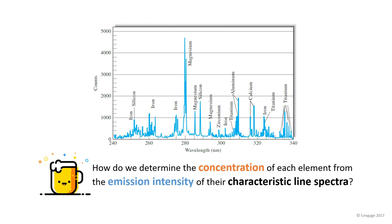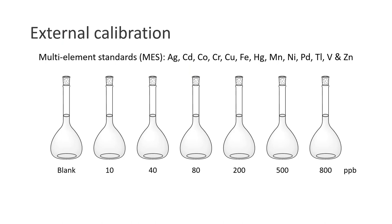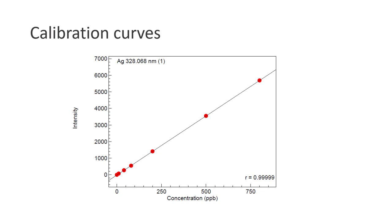In other words, how do we perform quantitative analysis using ICP-AES? Well, the answer is through external calibration, which most of us are already familiar with. In this experiment we'll be using multi-element standards containing these 13 elements of interest. Based on the ICP-AES results of the multi-element standards, we can plot calibration curves with emission intensity on the y-axis against the concentration of the multi-element standards on the x-axis.